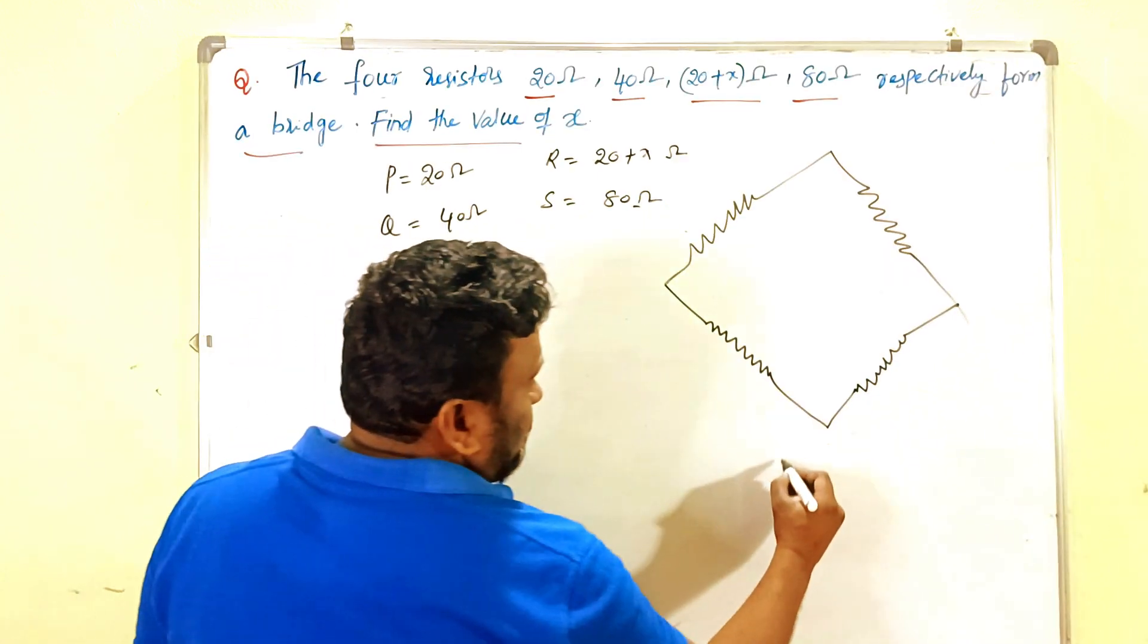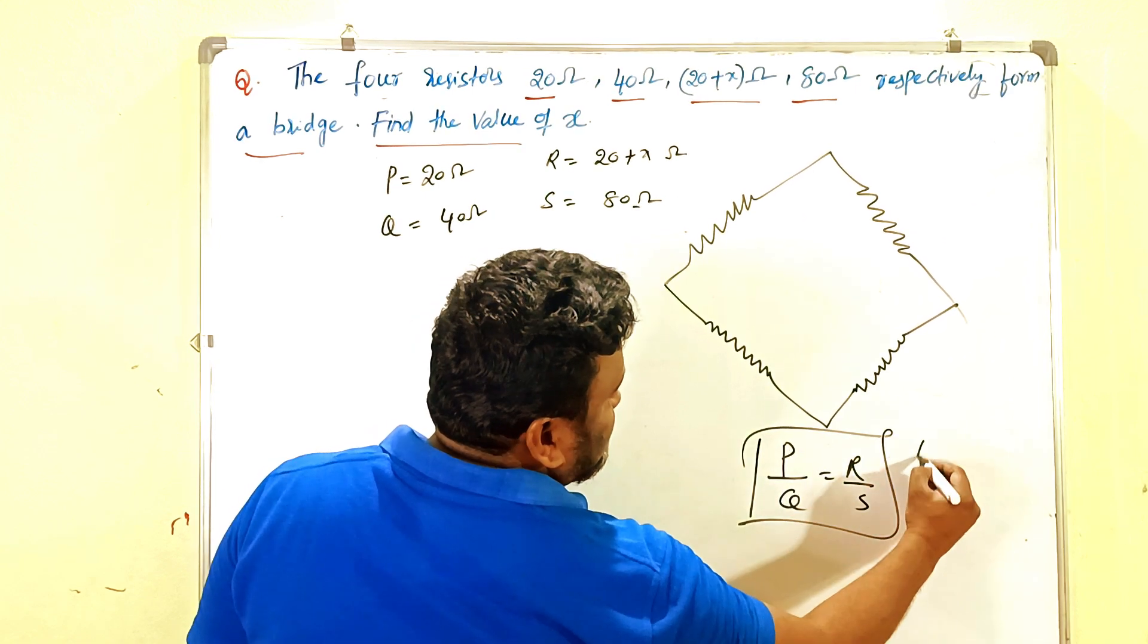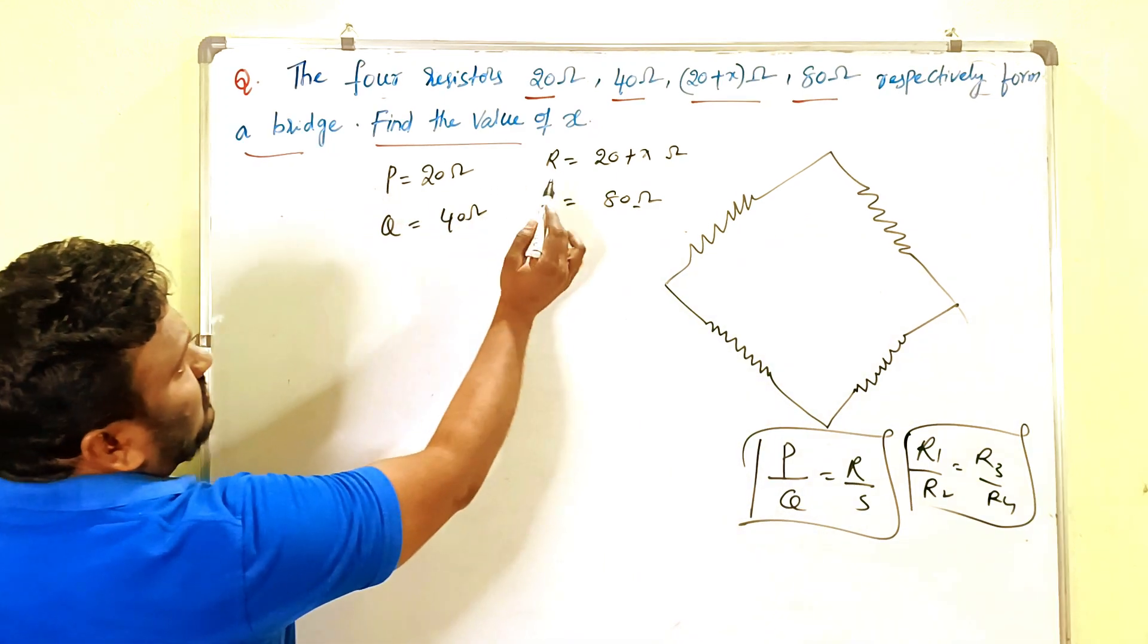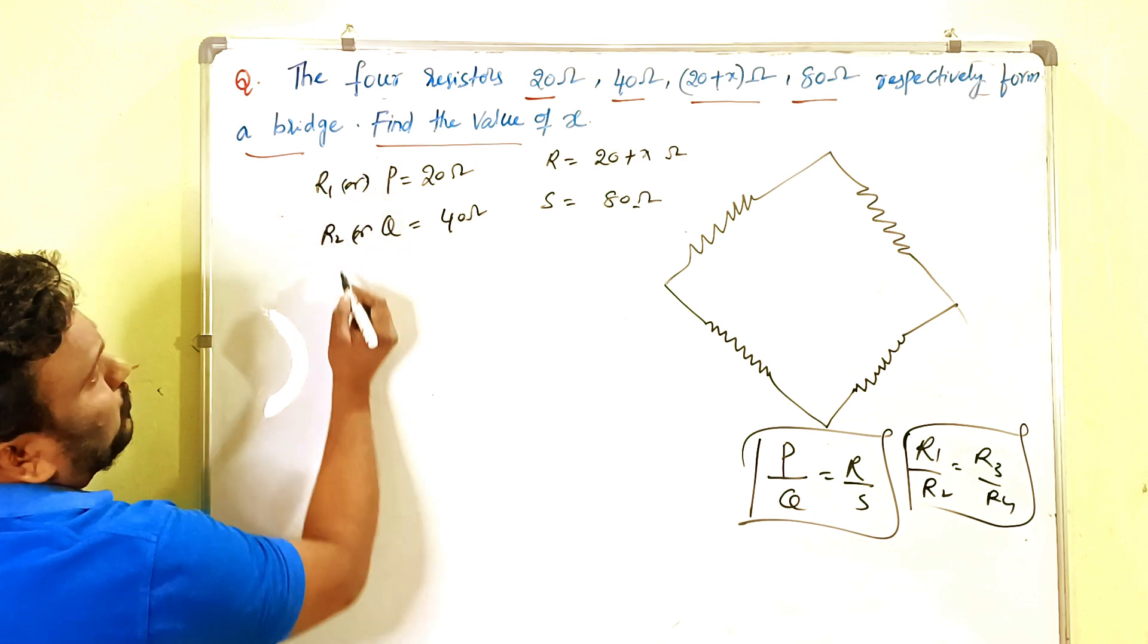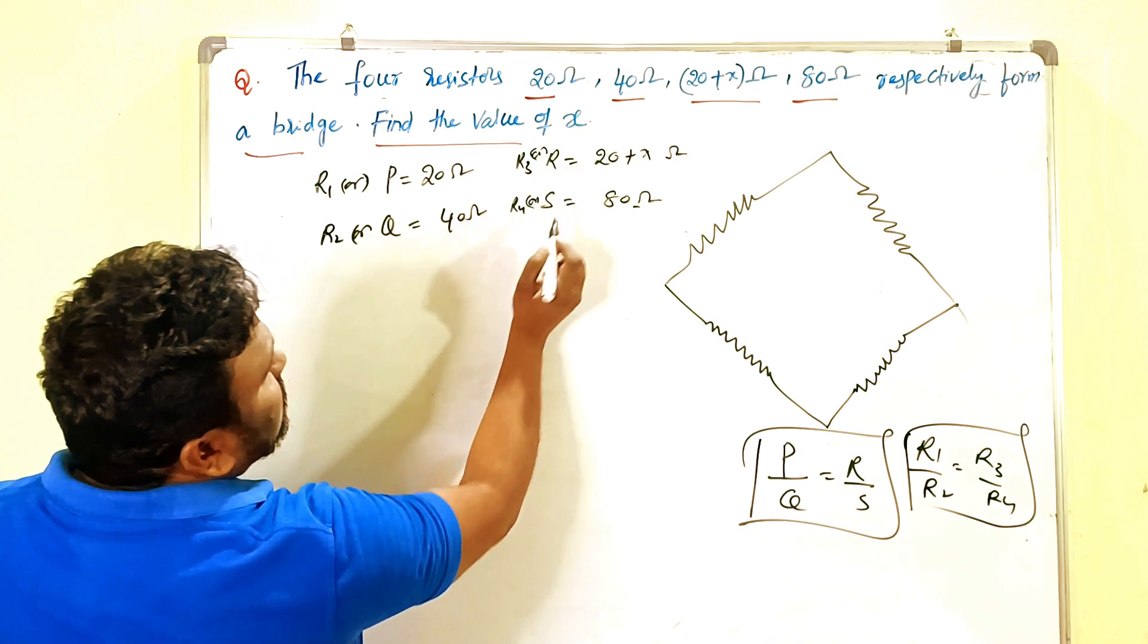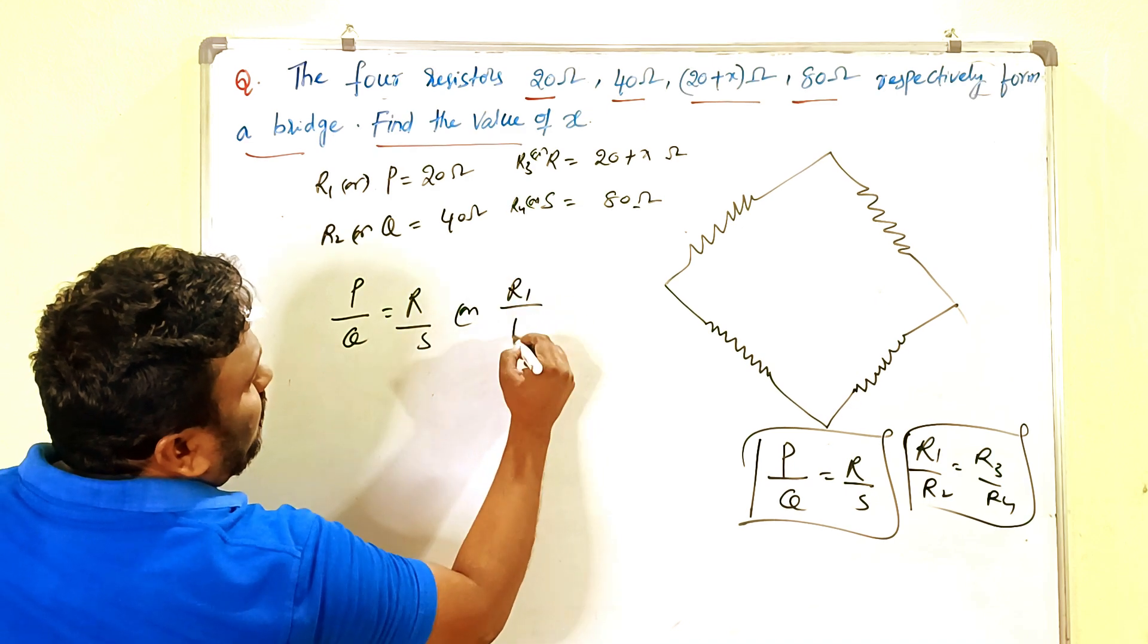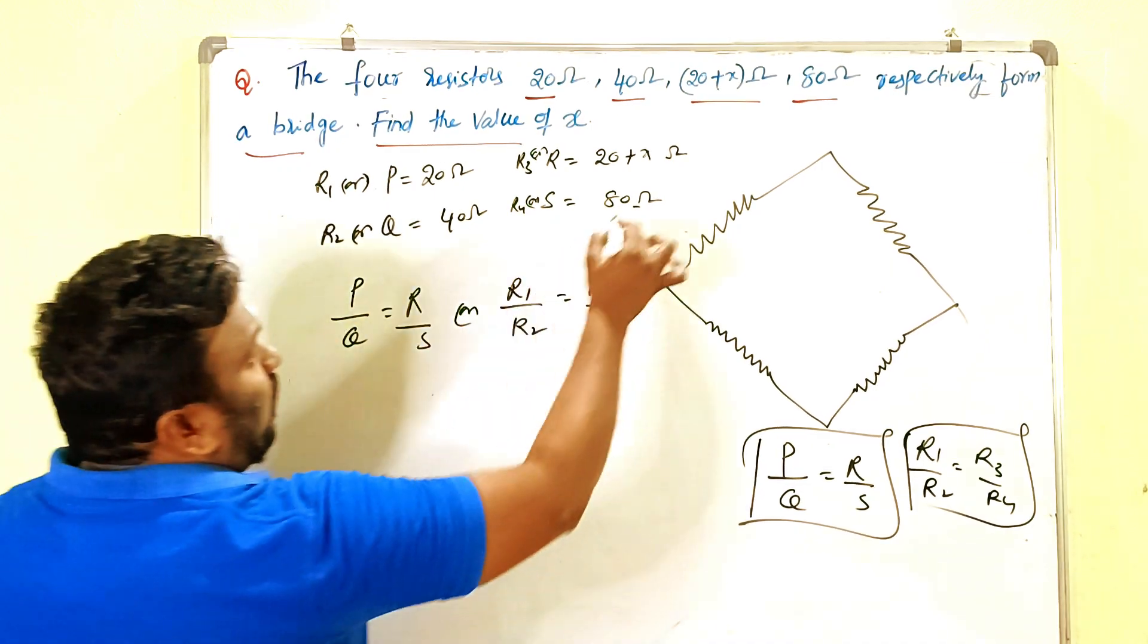You can take like this: actually the formula should be P by Q equals R by S. You may take like this also: R1 by R2 equals R3 by R4. No problem. This is R1, this is R2, this is R3, and this is R4. Whatever choice is yours. The formula is P by Q equals R1 by R2 equals R3 by R4.